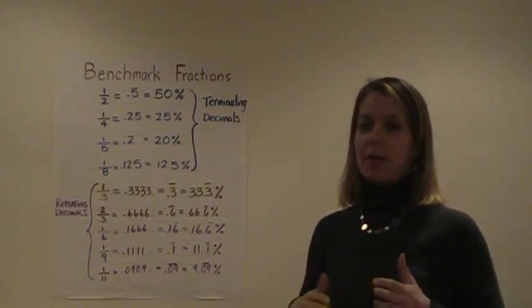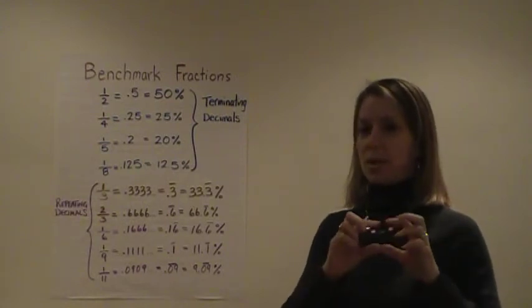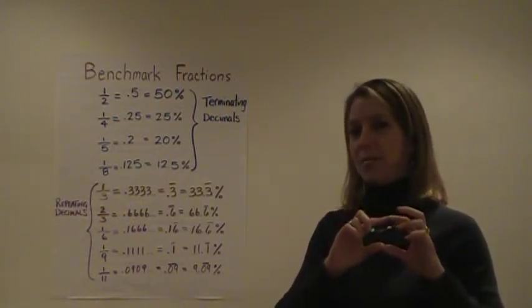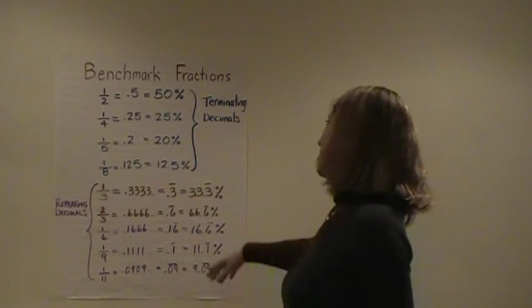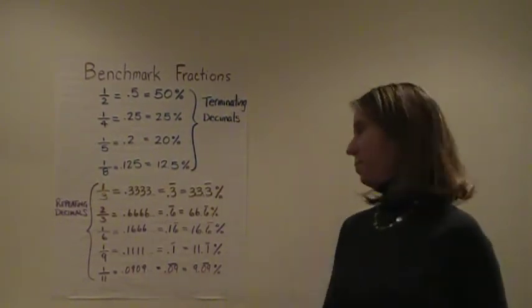And that's actually a calculator error. It's actually rounding up, but really it's trying to represent all those infinite number of sixes that are on there. So that becomes 66.6 with a line bar percent.